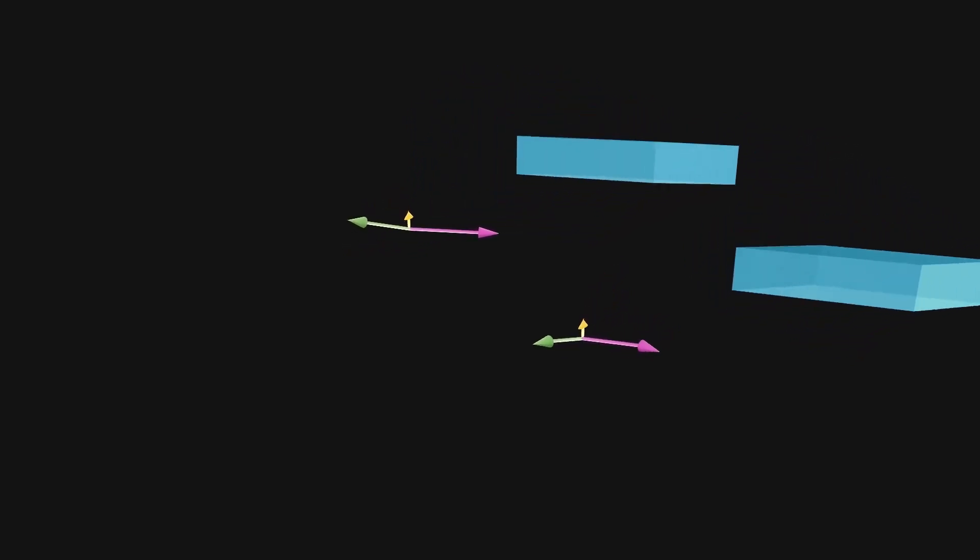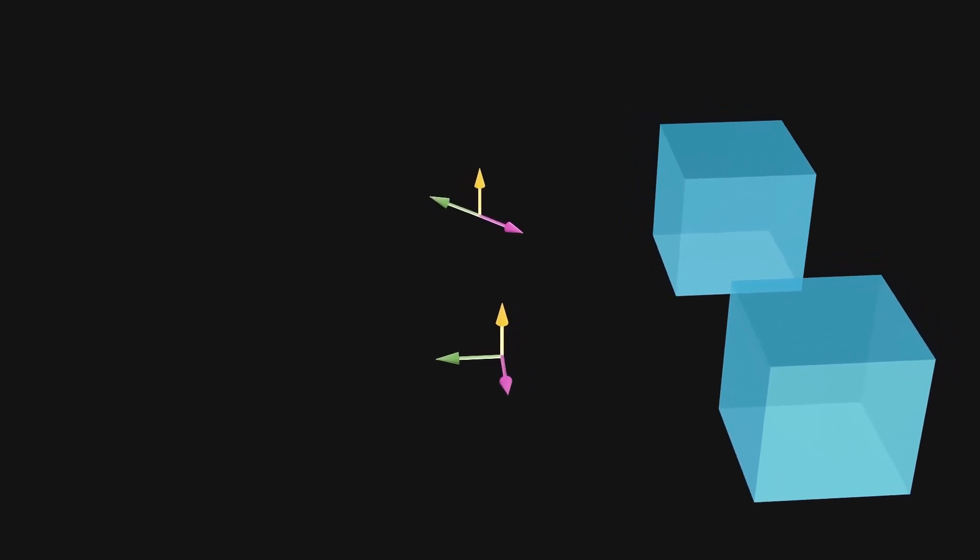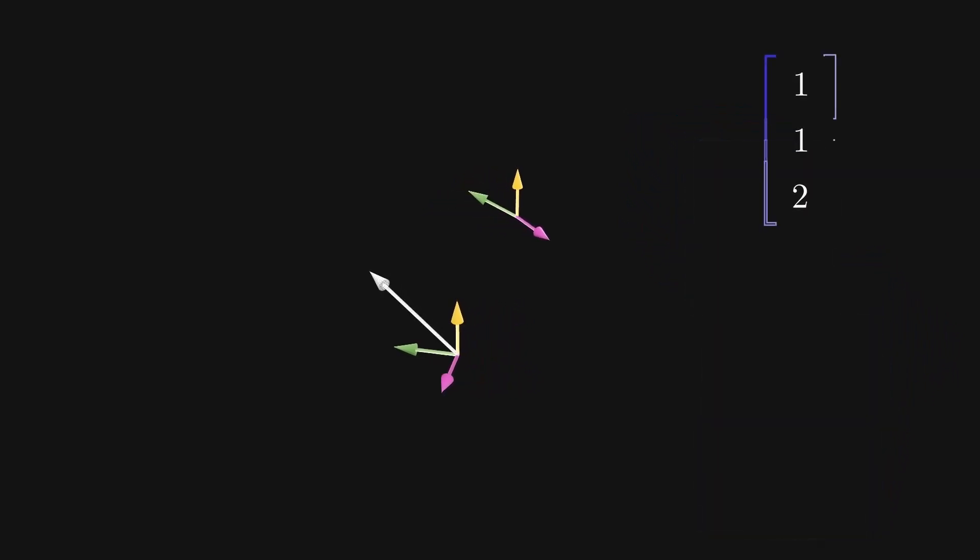We can pick a set of basis vectors that are only scaled by our transformation, so that our representation is of a diagonal form.